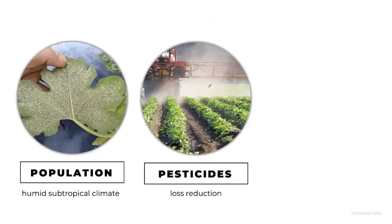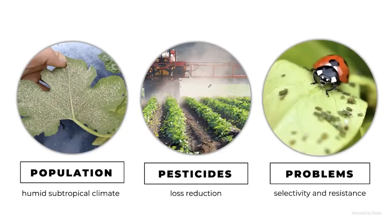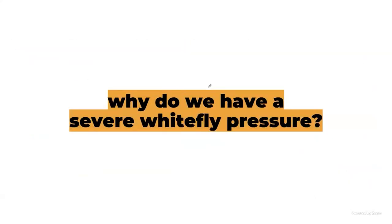The problems we face are population pressure and pesticide resistance. We have ideal conditions for the insect to develop, and excessive pesticide applications create resistance, allowing the insect to replicate and spread. This is not a problem only in Alabama — it affects Georgia and Florida as well.